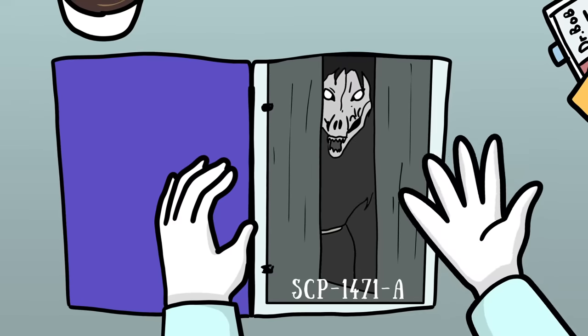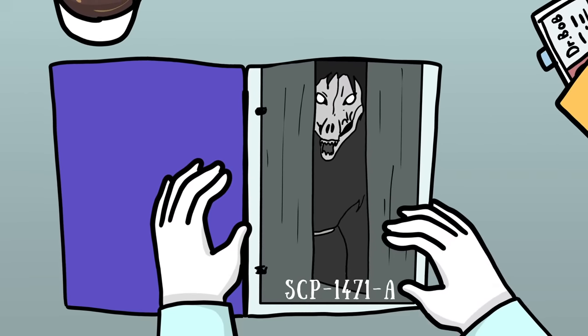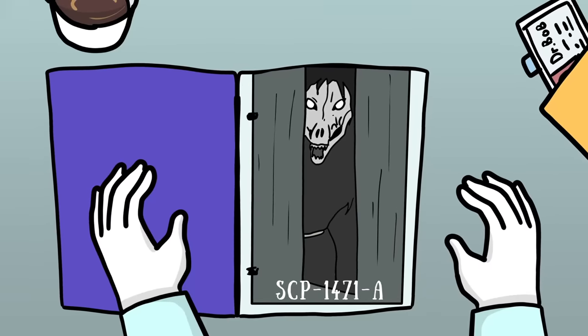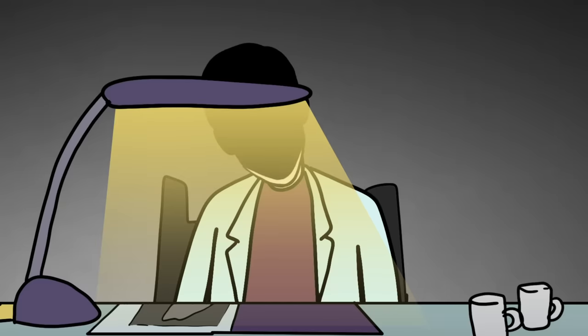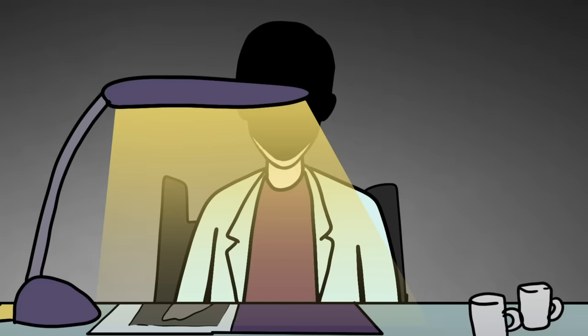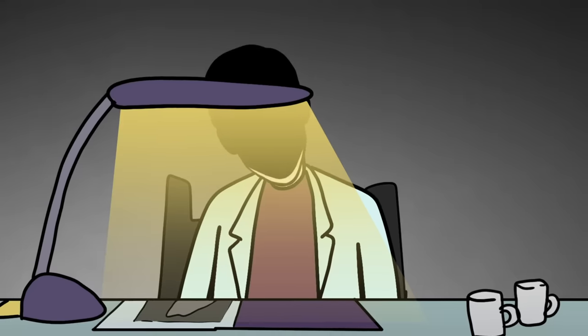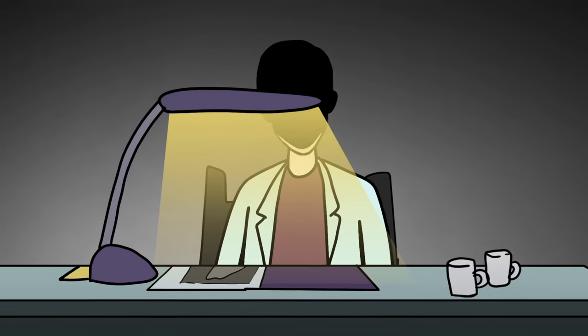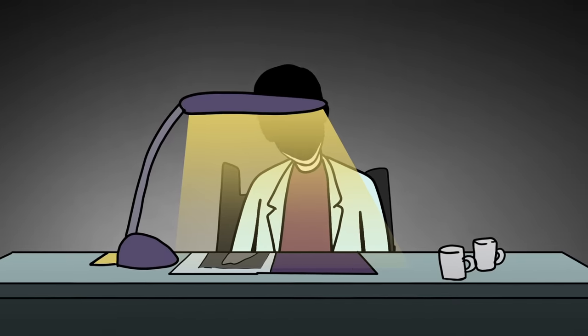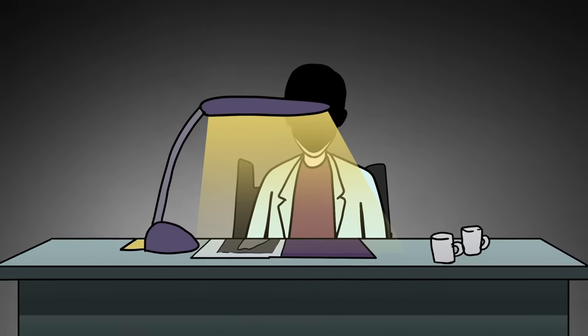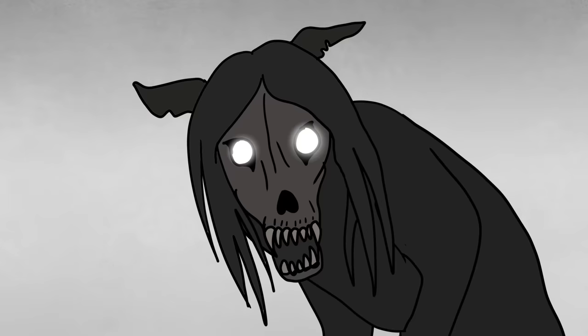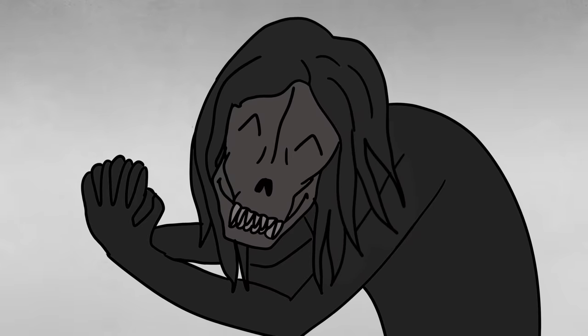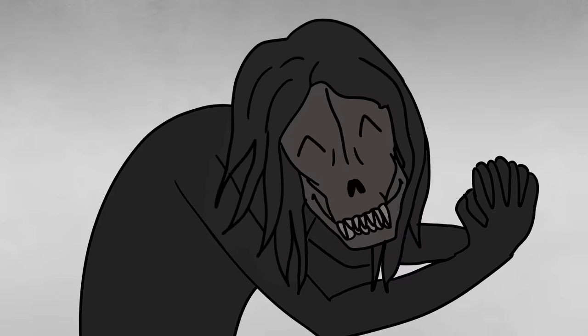Currently, the only known treatment to reverse the effects of SCP-1471 and the appearances of 1471-A is to eliminate the individual's exposure to the images before 90 hours have passed after installing the app. Once those 90 hours have elapsed, though, it is too late, and SCP-1471-A becomes a permanent presence in the individual's life. Thankfully, 1471-A has thus far remained non-hostile and has not been shown to pose a threat to those afflicted by it, at least not a physical threat.